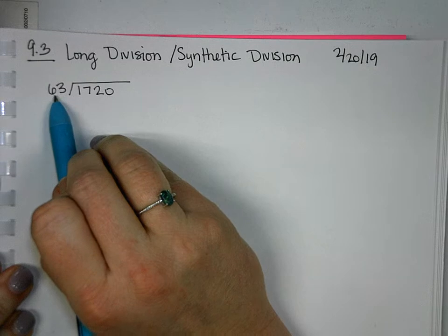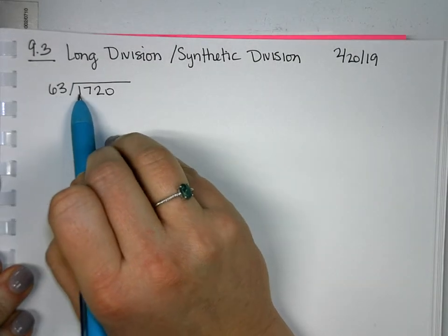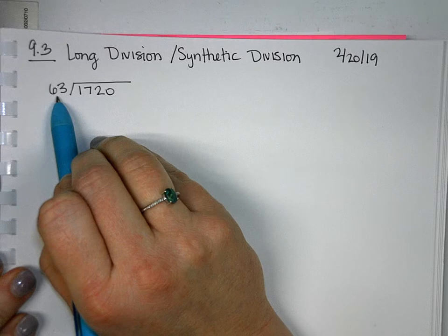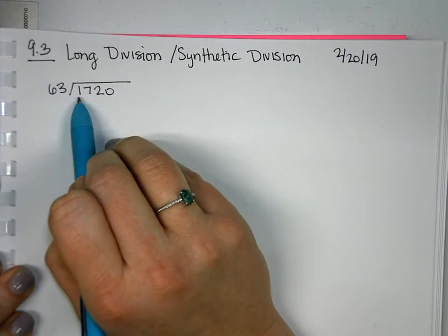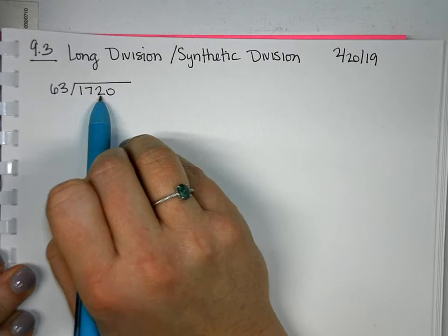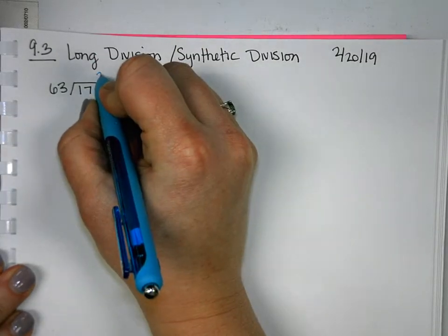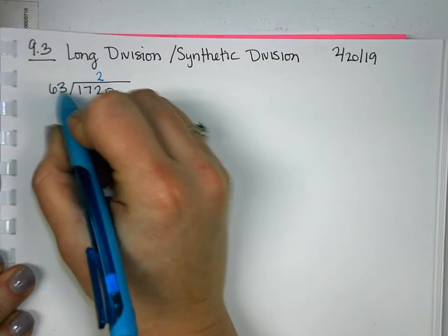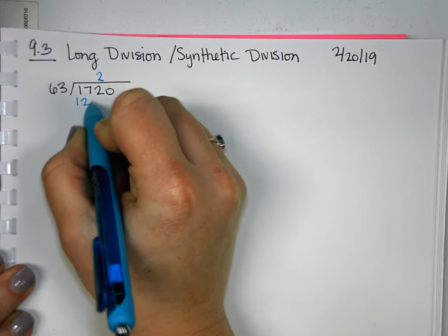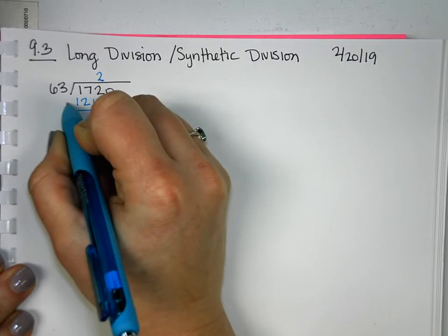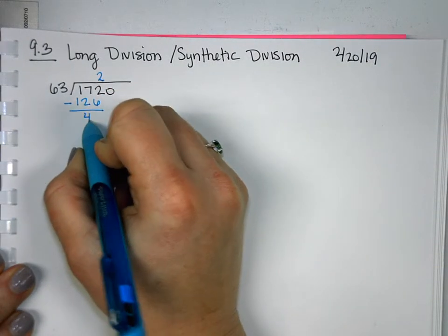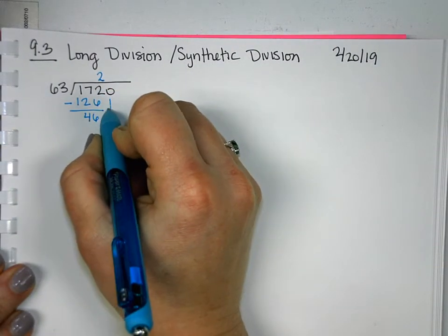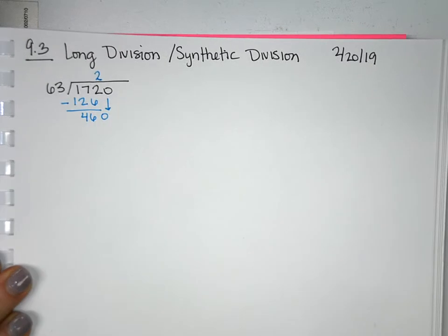We started with, how many times does 63 go into 1? It doesn't. So then we go on to 63 goes into 17. It doesn't. 63 goes into 172. Well, it goes in twice, and then we multiplied to get 126, and we subtracted to get the remainder. And our remainder here is 46, and then we brought down the next number.